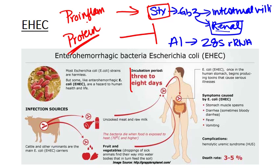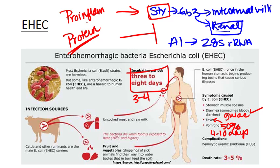The incubation period for EHEC is anywhere from three to eight days, with an average of three to four days. About 50% of patients experience vomiting, typically without fever — though it's about 50-50. Within about two days of that, you'll have bloody diarrhea, which can be identified visually or by a guaiac test. If the patient recovers without treatment, there's complete resolution within about four to ten days, though patients are often hospitalized.